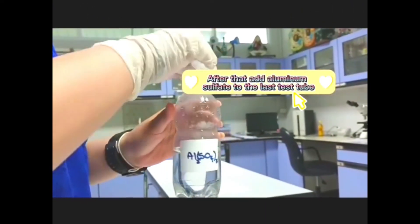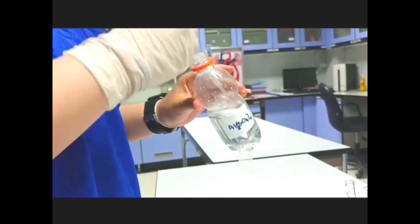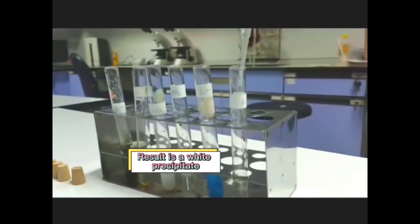After that, add aluminum sulfate to the last test tube. The result is a white precipitate.